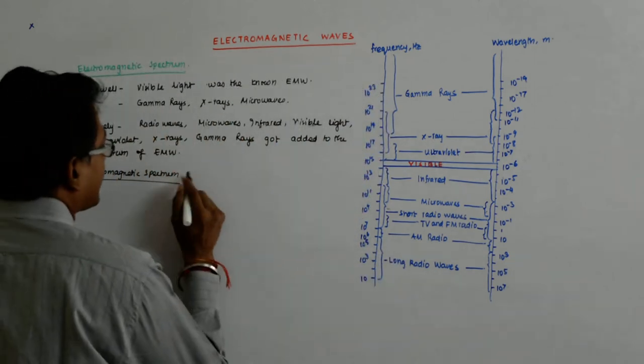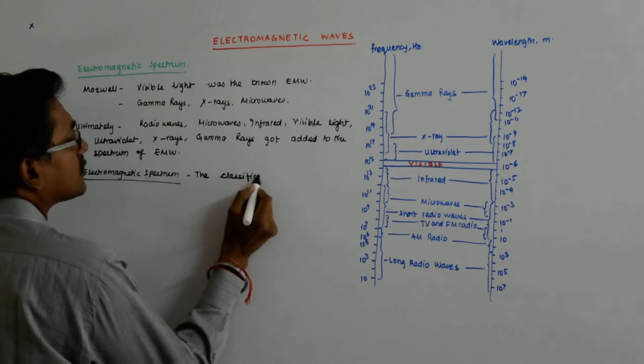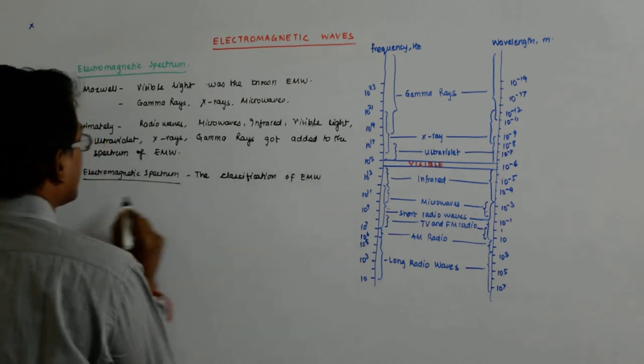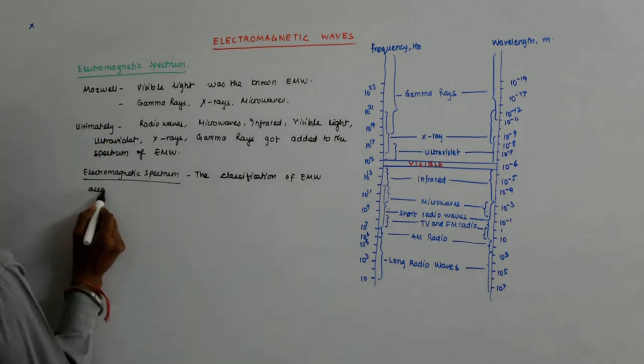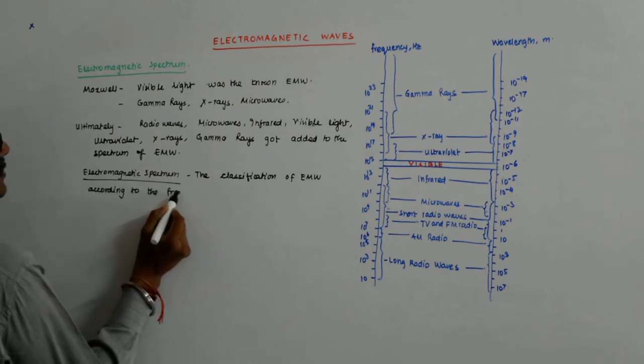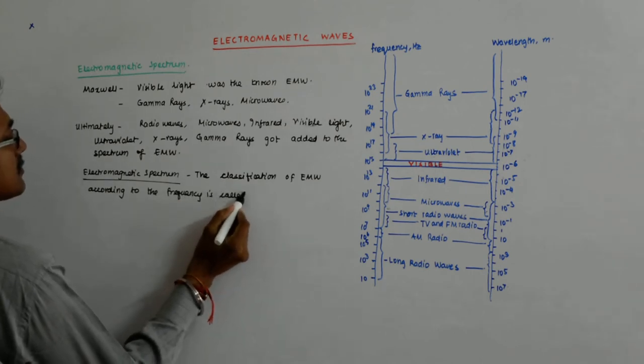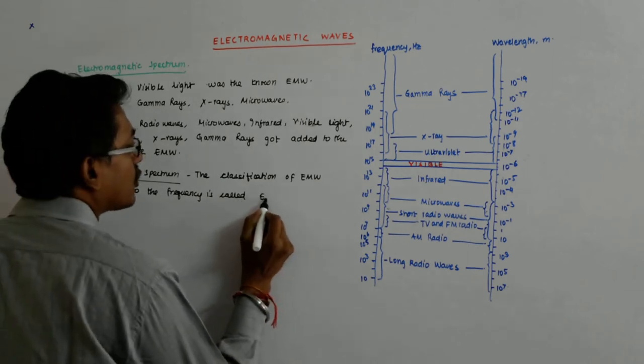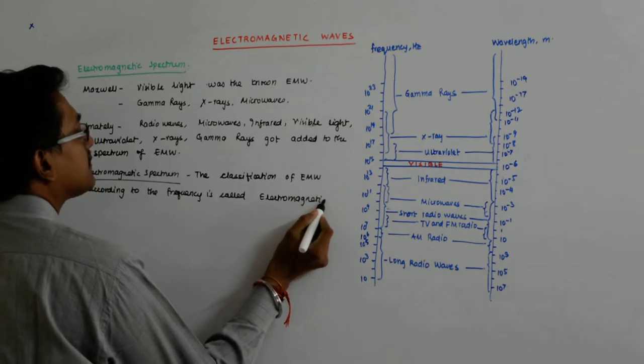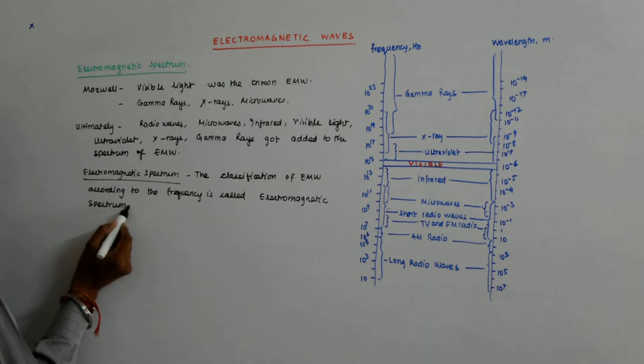So we classify them according to the frequency. The classification of electromagnetic waves according to the frequency is called electromagnetic spectrum.